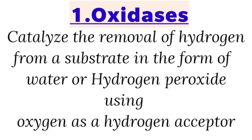Starting with oxidases: these are the enzymes that catalyze the removal of hydrogen from a substrate in the form of water or hydrogen peroxide. Whenever these enzymes are removing the hydrogens, the acceptor of the removed hydrogens is oxygen.